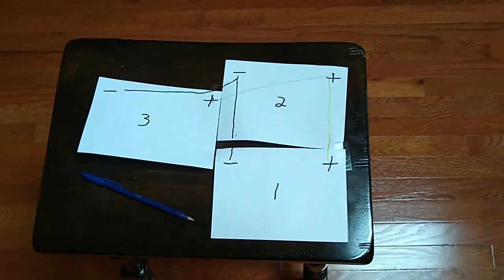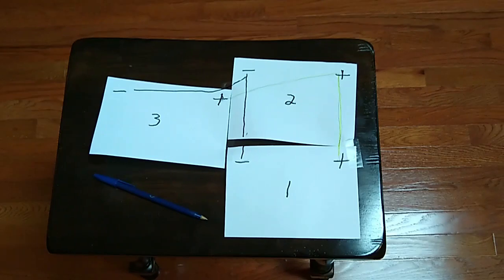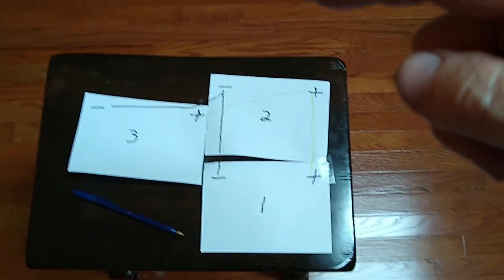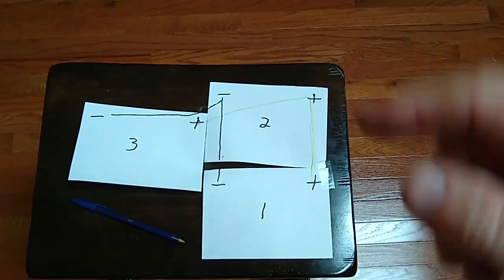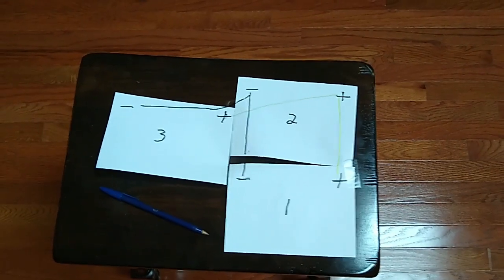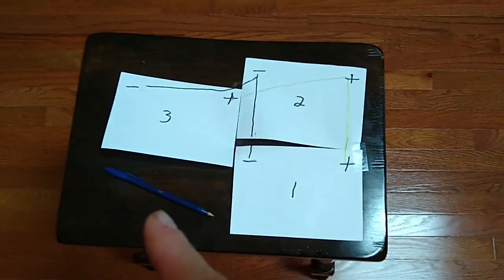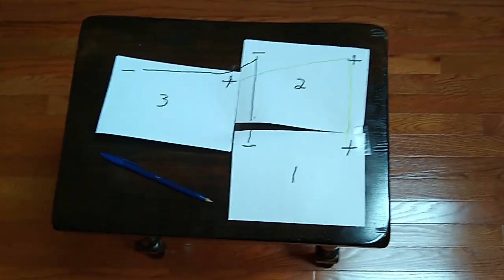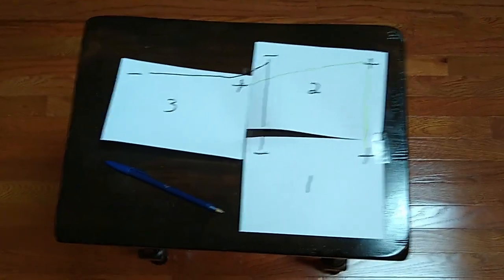This would be much less confusing if I had room to put battery number three right on top of battery number two. But I don't have that luxury in my van. I'm going to have to sidestep the battery over to the side just because of the way the room is in my van that I have.